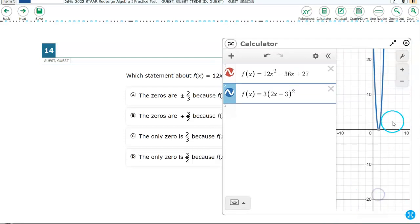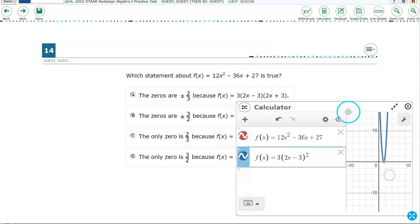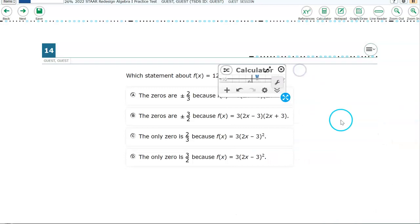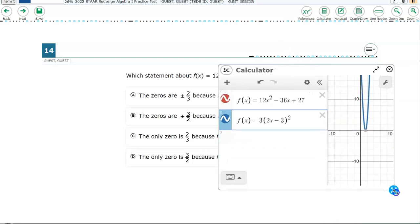Well, let me try to resize this. My apologies. All right. Let's just put this up here for now. All right. This one, the last two answer choices say the only zero is two-thirds. And the only zero is three-halves. So let's see what the zeros are. When you click here, you'll see the zero. Which is the point on the x-axis where the parabola crosses.